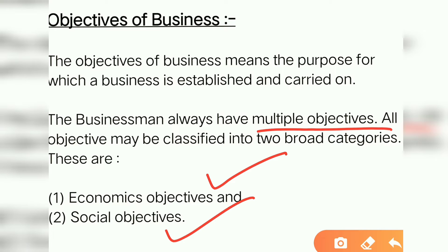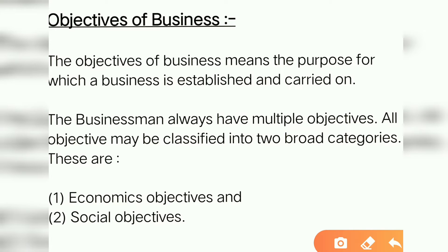The objectives are generally the aim or goal of the organization which they want to achieve, and for achieving that goal they have established their business. All businessmen have multiple objectives, not just one. Now the objectives are classified into two broad categories: the first is economic objectives and the second is social objectives. In today's class, we will study about economic objectives.